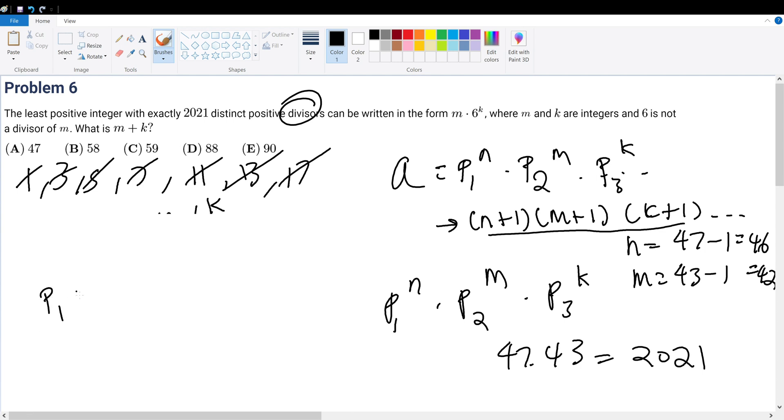Prime 1 has n, so that's 46, times prime 2 with 42. We're trying to find the minimum number, so what's the smallest prime numbers we can put? That's 2 and 3. With larger exponents giving larger values, let's put 2 to the 46 and 3 to the 42nd.